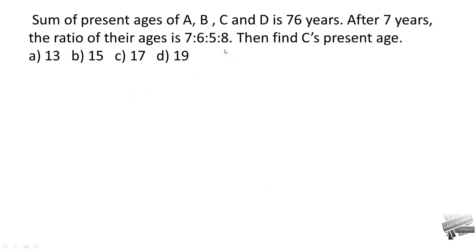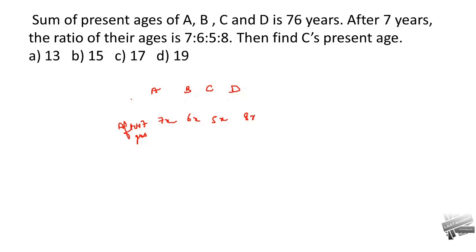Next question: the sum of the present ages of A, B, C, D is 76 years. After seven years, the ratio of their ages becomes 7 to 6 to 5 to 8. After seven years their ages are 7x, 6x, 5x, and 8x.